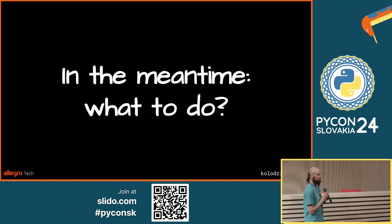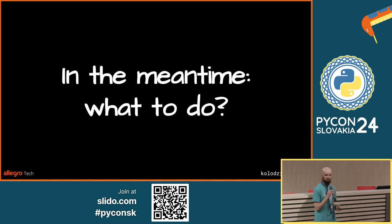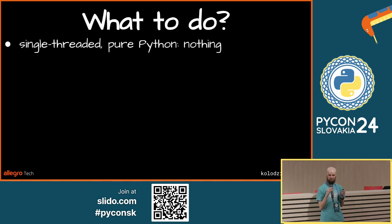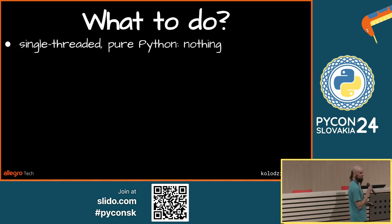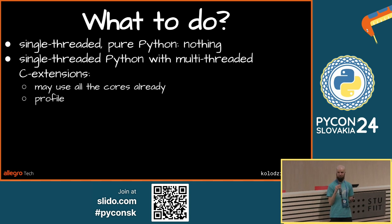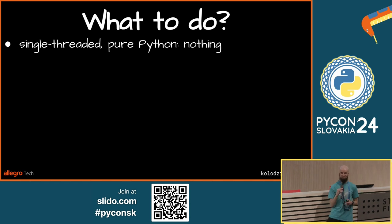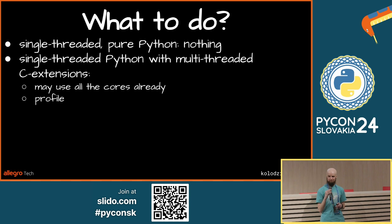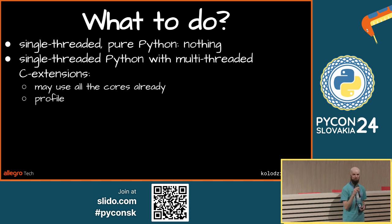What should we do in the meantime? It depends on what you're doing with Python. If you're writing single-threaded purely Python code, basically nothing — you don't suffer from the GIL. If you're writing single-threaded Python using multi-threaded C extensions, your programs may already use multiple cores — just run it and check with any monitoring tool. If in doubt, profile your code, see where the bottlenecks are, and act accordingly.